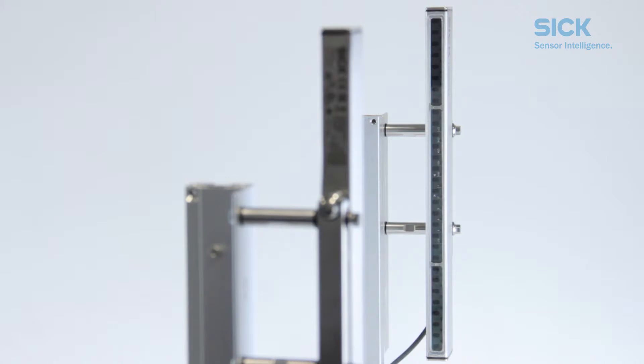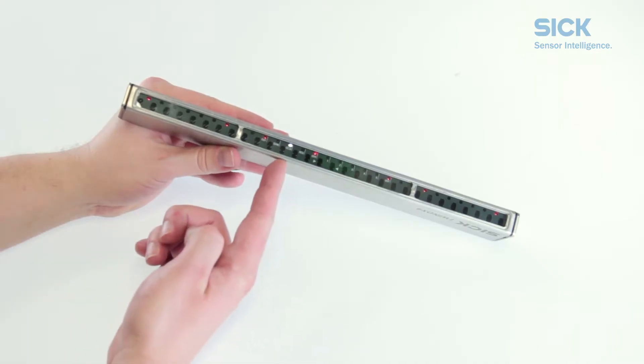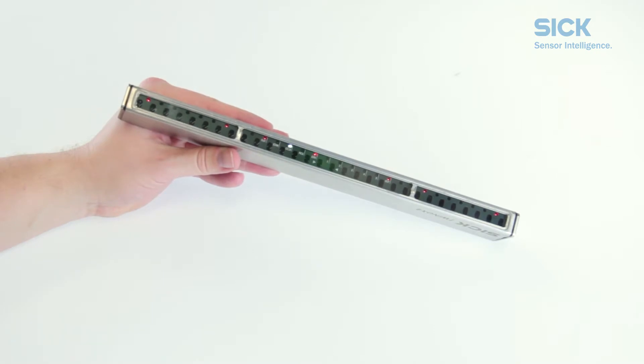As a first step, switch on the power supply for the safety light curtain. Note that the COM LEDs on both sticks start to flash white immediately. This signals the first ever synchronization between this pair of twin sticks. In other words, this safety light curtain is still in factory settings.